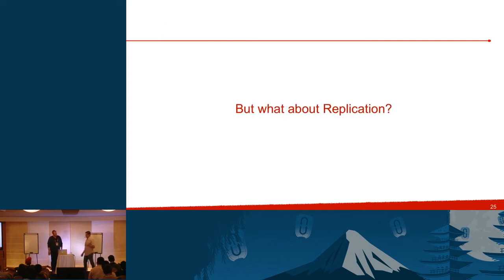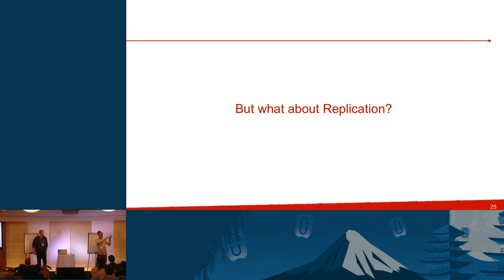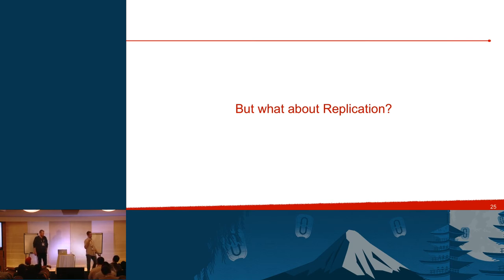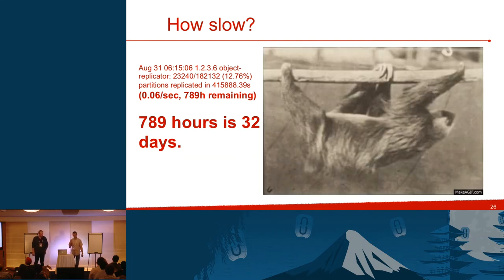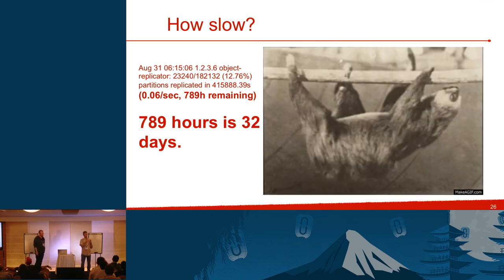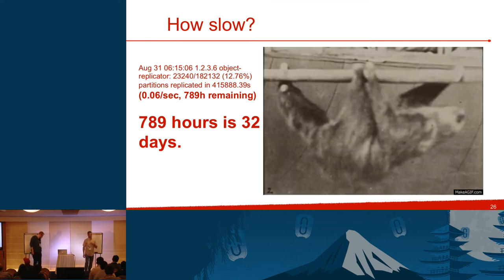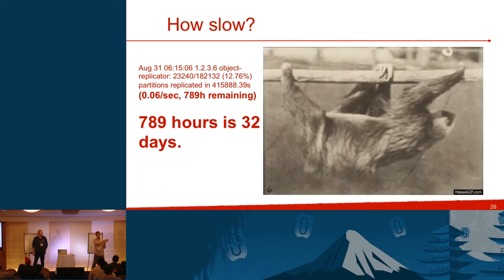Hummingbird has helped a lot with the object server, but we still have the replication problem. Replication is what does everything — if a node goes down because a hard drive fails, you get new gear in, and the replicator finds another copy of the object and replaces it. It's the magic behind Swift. The replicator is written in Python using rsync to move data, and it can get very slow. We had a log from one production node where the replicator said it would not finish a pass for 32 days.